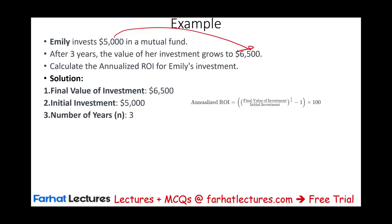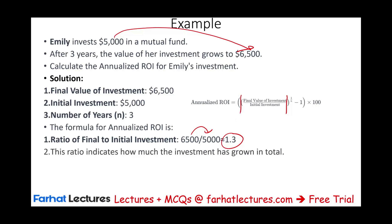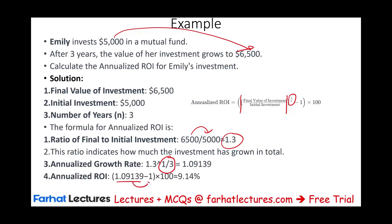Plugging into the formula: $6,500 divided by $5,000 equals approximately 1.3. We raise 1.3 to the power of 1/3, which gives us approximately 1.09139. Subtracting 1 gives 0.09139, and multiplying by 100% gives an annualized return of approximately 9.14%. So Emily can say her investment is earning 9.14% per year, and she can compare this to other investment alternatives.